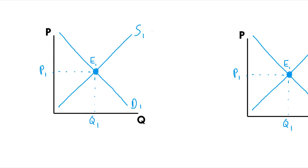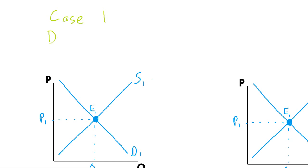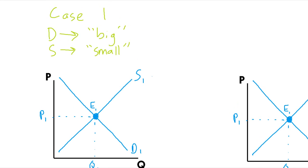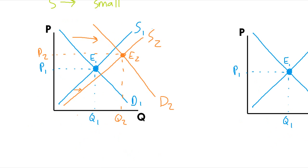So on the first graph, let's draw a big demand shift and a small supply shift. Notice that when I draw S2 and D2, I'm going to use a different color to help see the results. So here are big demand shift and small supply shift. We notice the comparison between the points E1 and E2. P star increased and Q star increased.